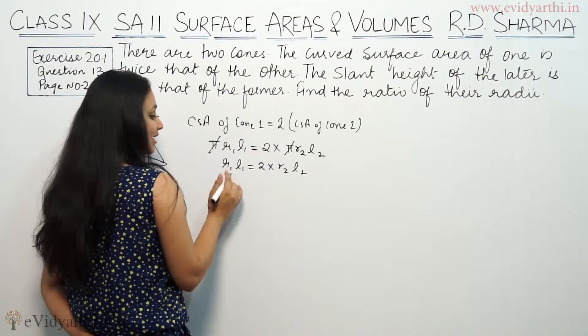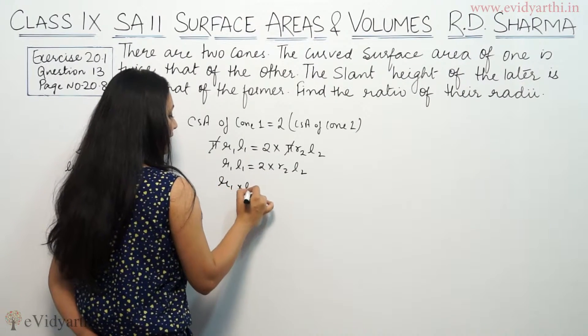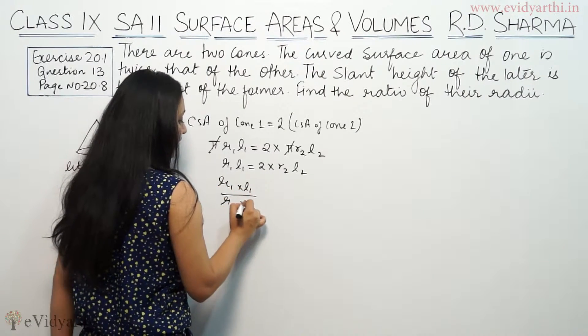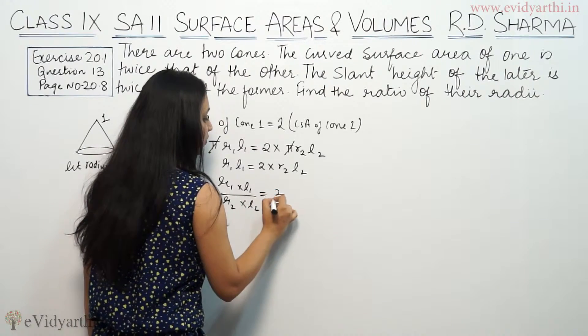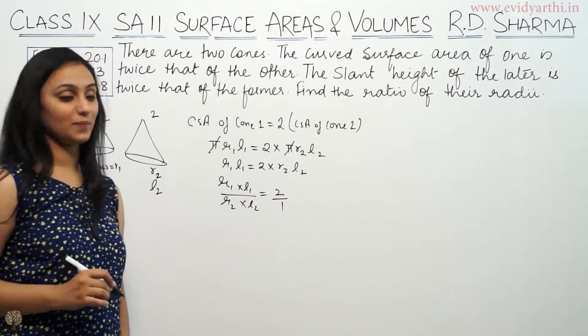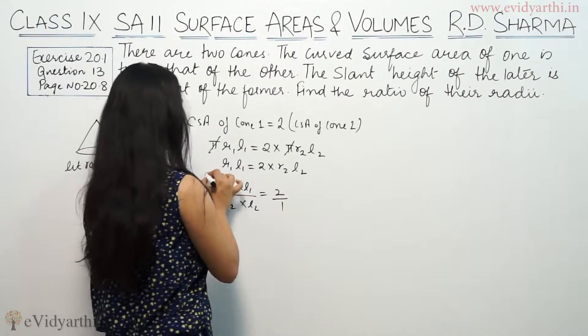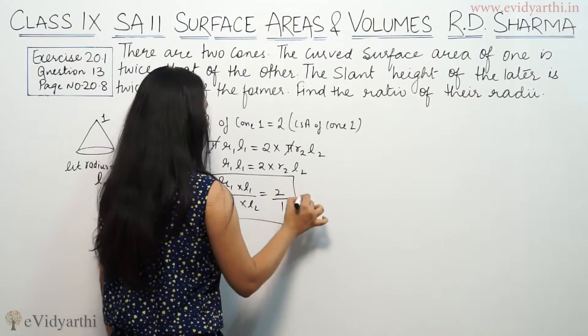Now, if we write this also, so R1 into L1 by R2 into L2 is equal to 2 by 1. This is our equation number 1.